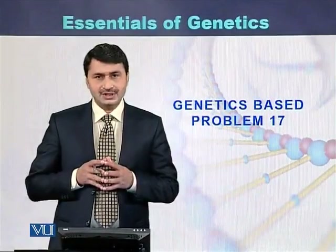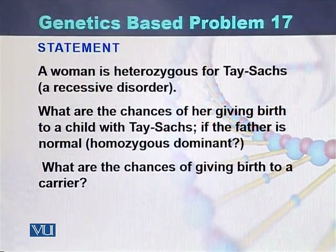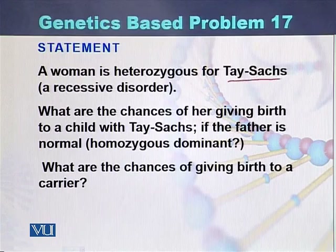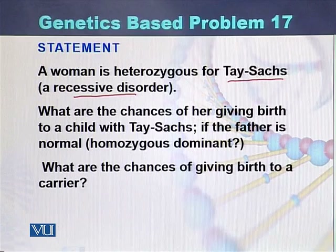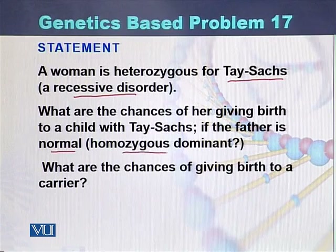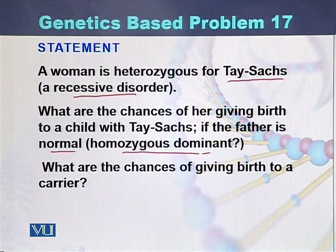Genetics problem 17. In this problem, a woman is heterozygous for a disease that is a recessive disorder. What are the chances of her giving birth to a child with that disease if the father is normal and homozygous dominant? The disease is recessive and she is heterozygous, while the father of the child is normal, that is homozygous dominant.